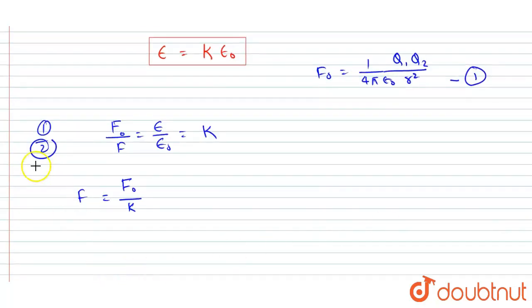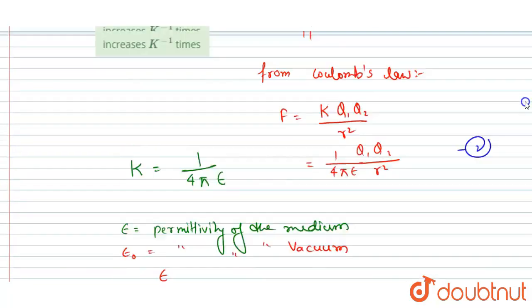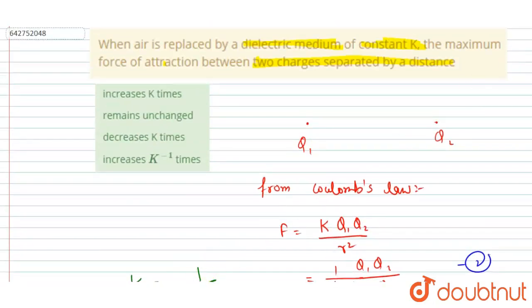Now you could choose the correct option. So if you see the option given here: increases K times, remain unchanged, decreases K times, and increases K inverse times. So it's not increasing, it's decreasing by K times, so C will be the correct answer.